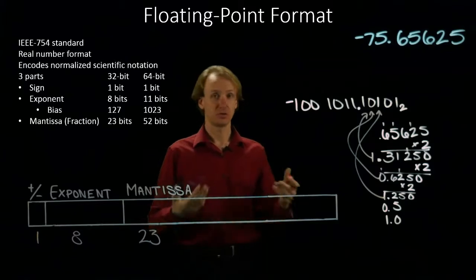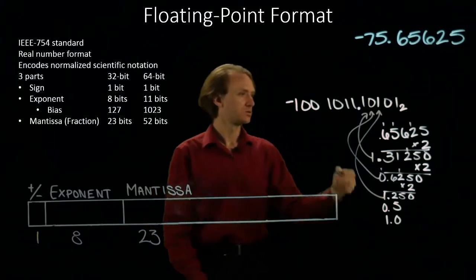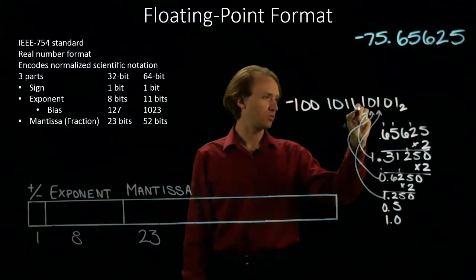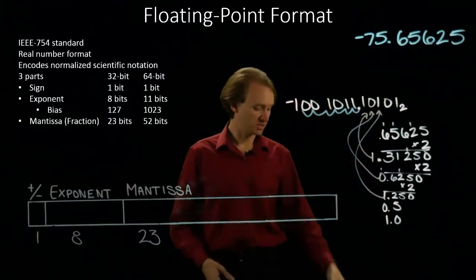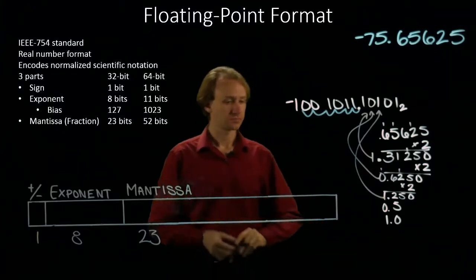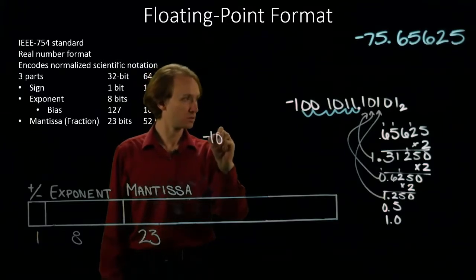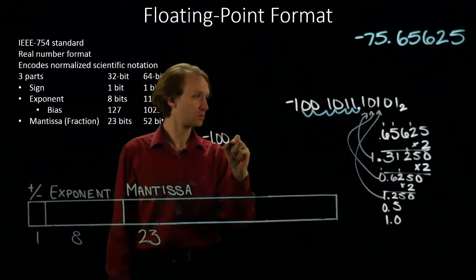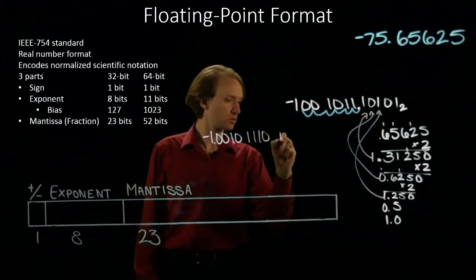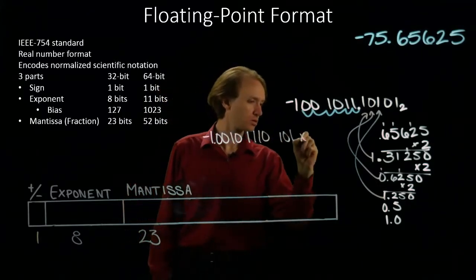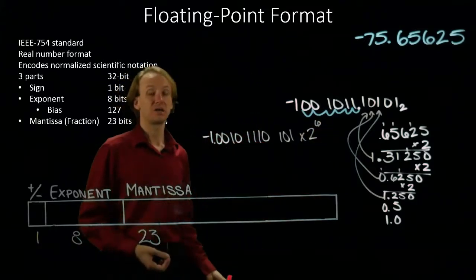I now need to convert this number into normalized scientific notation. So I'll want to move the binary point over 1, 2, 3, 4, 5, 6 places again. Which means that I will get... So there's my normalized scientific number.